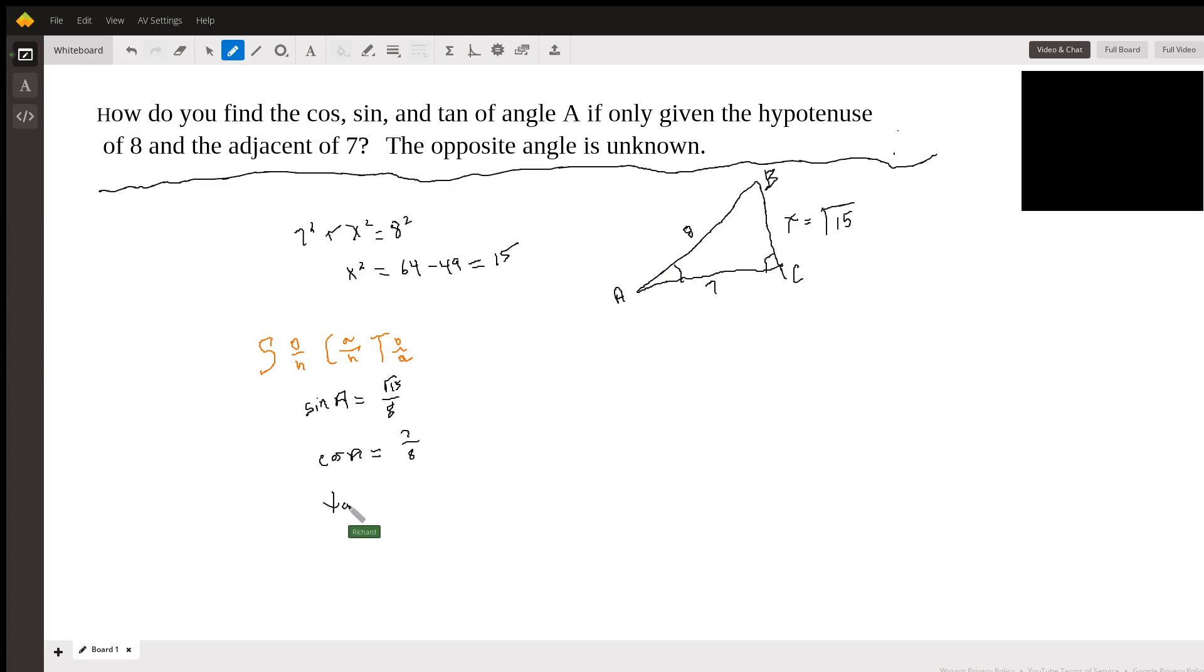And the tangent of angle A equals opposite over hypotenuse. So that's root 15 over 7. And that's it.